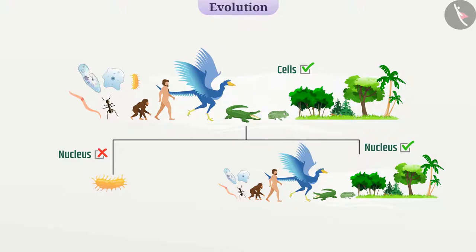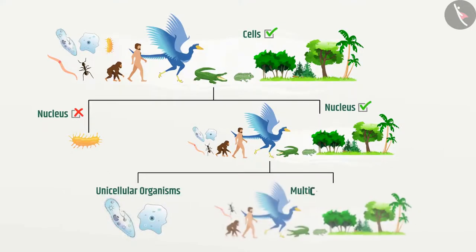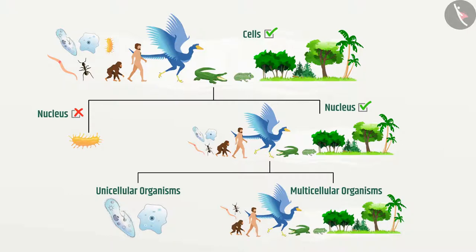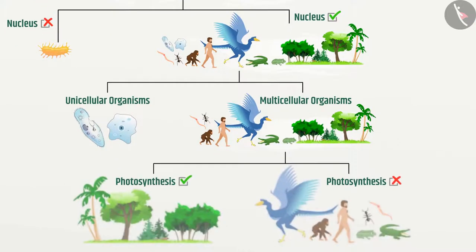Then, we will classify those organisms which have nucleus into unicellular organisms and multicellular organisms. At the next level, we can classify multicellular organisms based on ability to do photosynthesis.